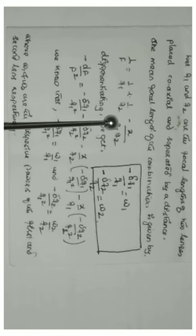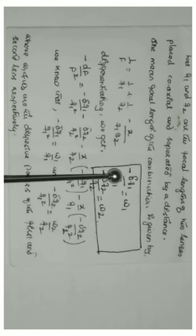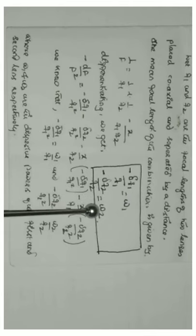To differentiate the last component, we use the UV method. For the first term, we take −X/F2 as common; differentiation of 1/F1 is −DF1/F1². For the second term, −X/F1 is constant; differentiation of 1/F2 is −DF2/F2². In this expression, we define −DF1/F1 = ω1 and −DF2/F2 = ω2.